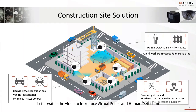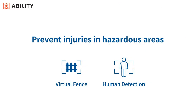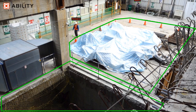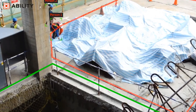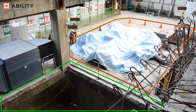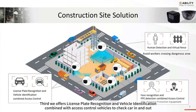This video shows virtual fence and human detection. This function can avoid workers crossing into dangerous areas. Third, we offer license plate recognition and vehicle identification, combined with access control to track cars entering and exiting the site.